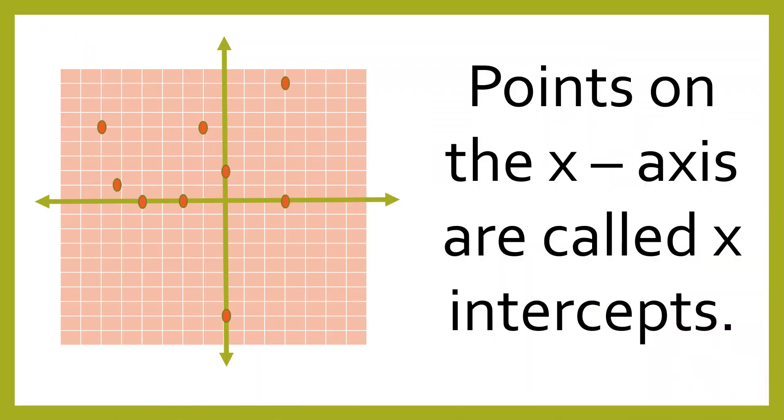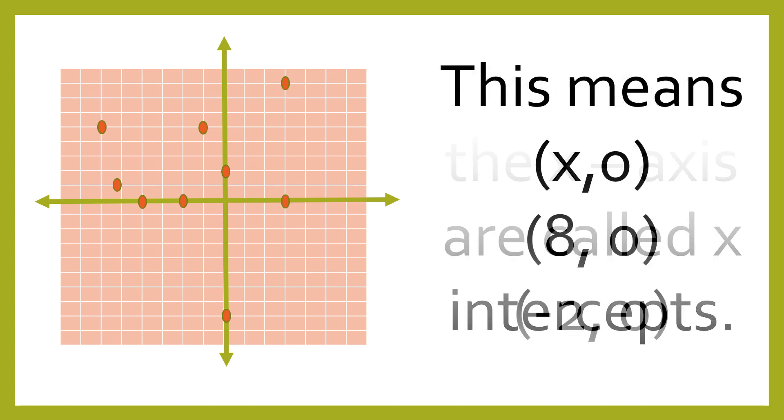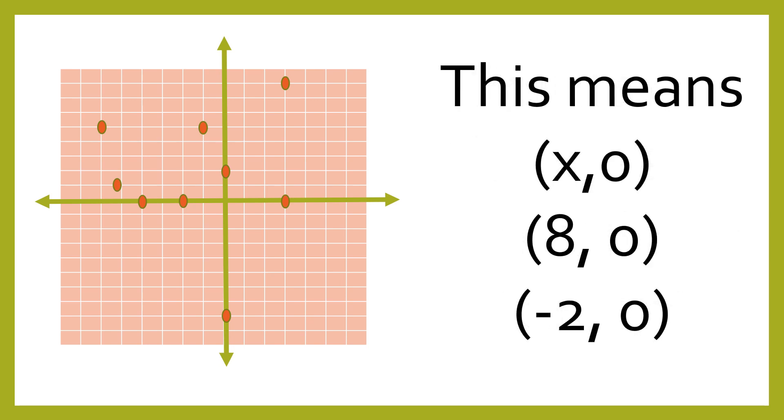The points on the x-axis are called x-intercepts. This means x is 0, 8 is 0, and negative 2, 0 are called x-intercepts.